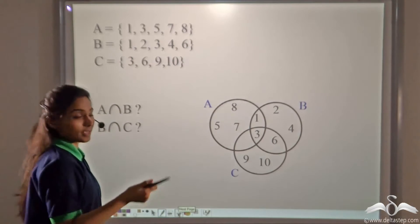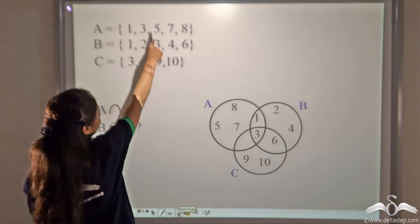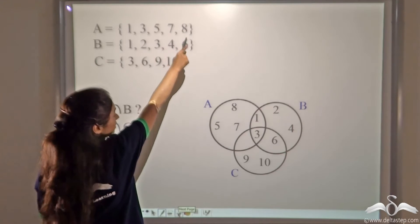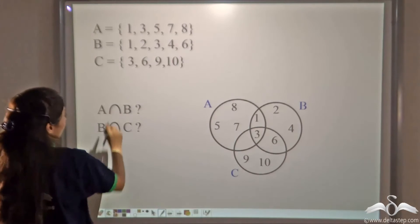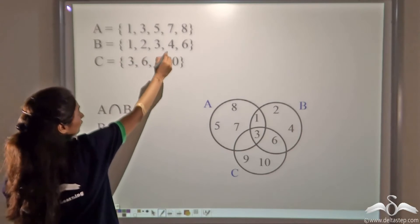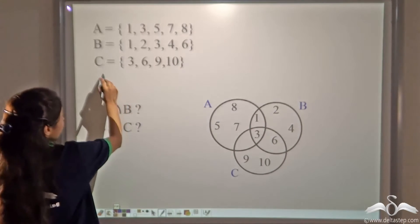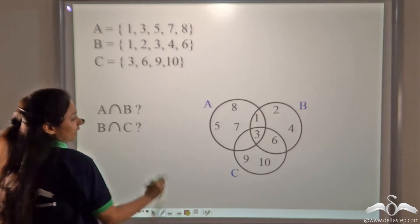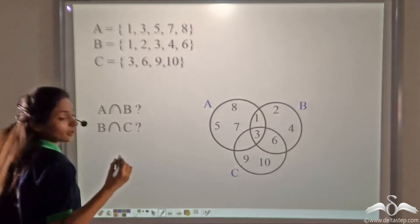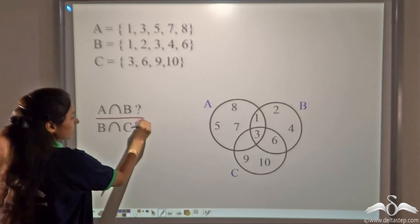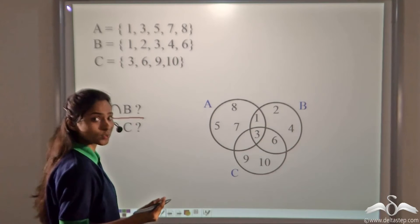Now let's apply this with numbers. Set A is {1, 3, 5, 7, 8}, set B is {1, 2, 3, 4, 6}, and set C is {3, 6, 9, 10}. Each is shown on a Venn diagram. Can you find A intersection B? You have already learnt to find intersection between two sets — find it out.